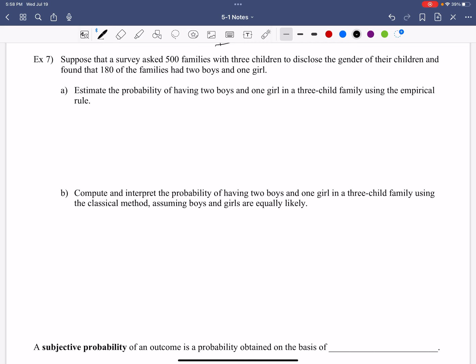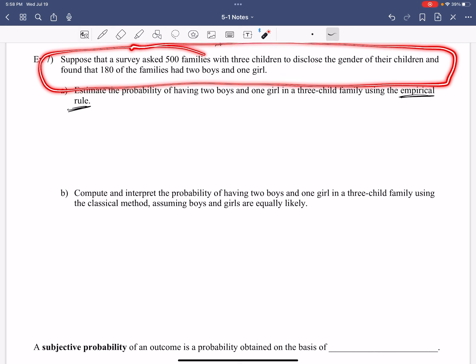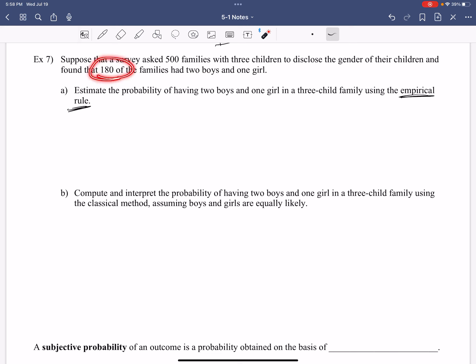Let's try this one on. Suppose a survey asked 500 families with three children to disclose the gender of their children and found that 180 of those families had two boys and a girl. Estimate the probability of having two boys and a girl in a three-child family using the empirical rule. So here we are. The empirical rule says that based on the data given.